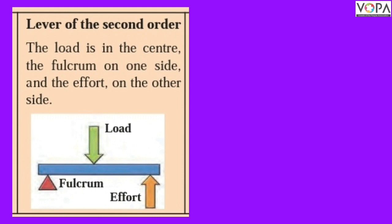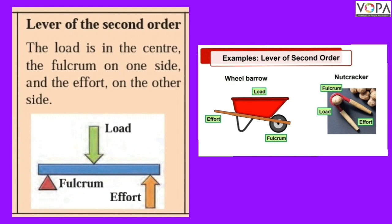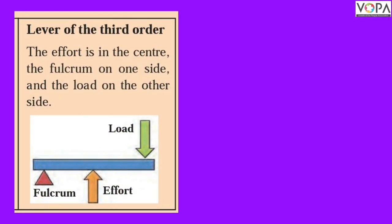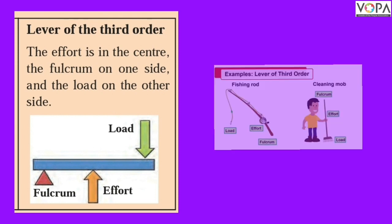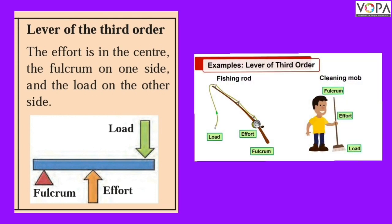Examples of first-order levers are a trolley, removing lead, and a nutcracker. In the third-order lever, the effort is in the center, and one end has a fulcrum and the other end has a load. Examples are cleaning tongs and a fishing rod.